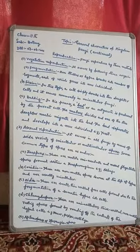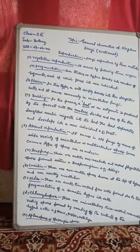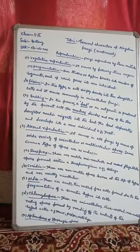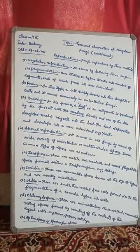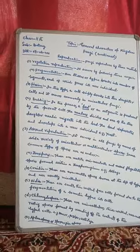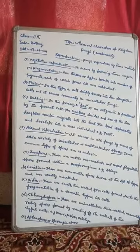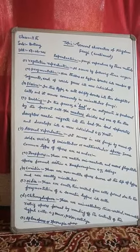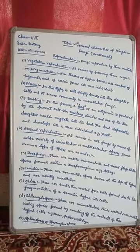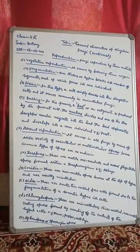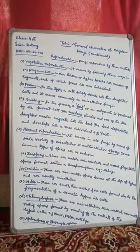First of all we will take vegetative reproduction in fungi. It occurs by the following three ways. Number one is fragmentation. In fragmentation, the thallus or hyphae breaks into a number of segments, each of which grows into a new individual.